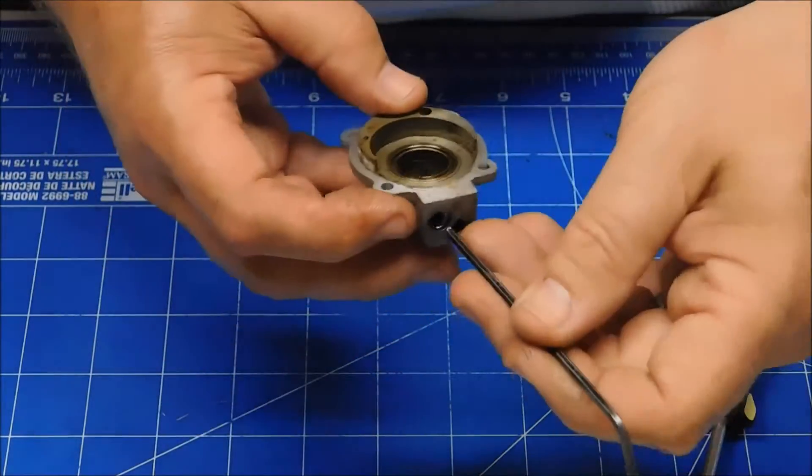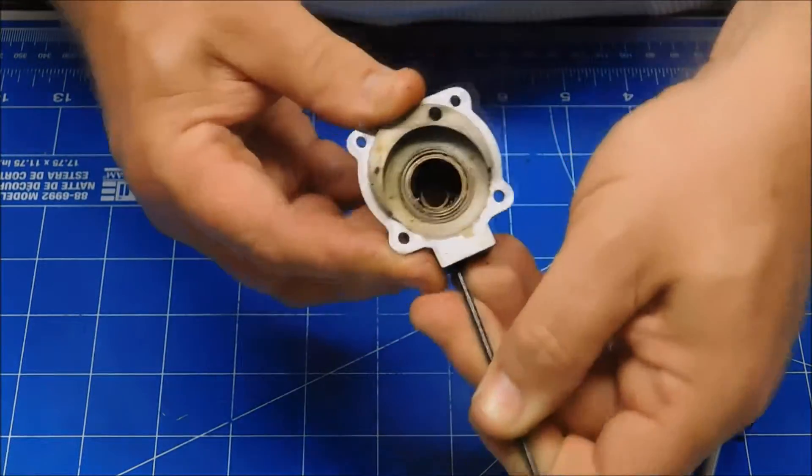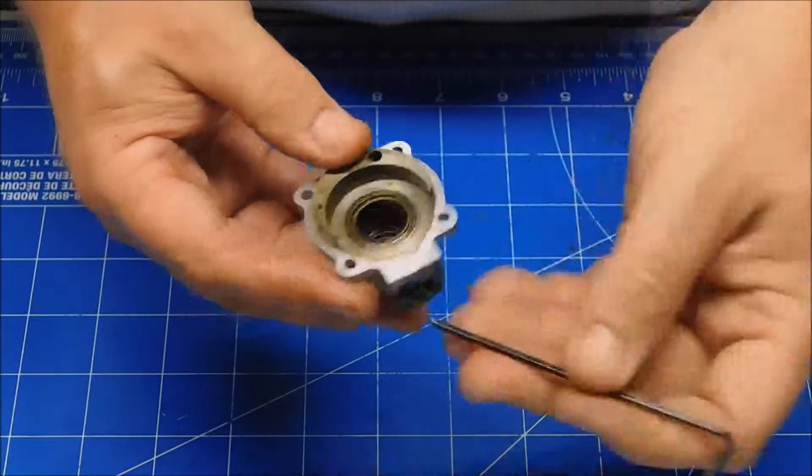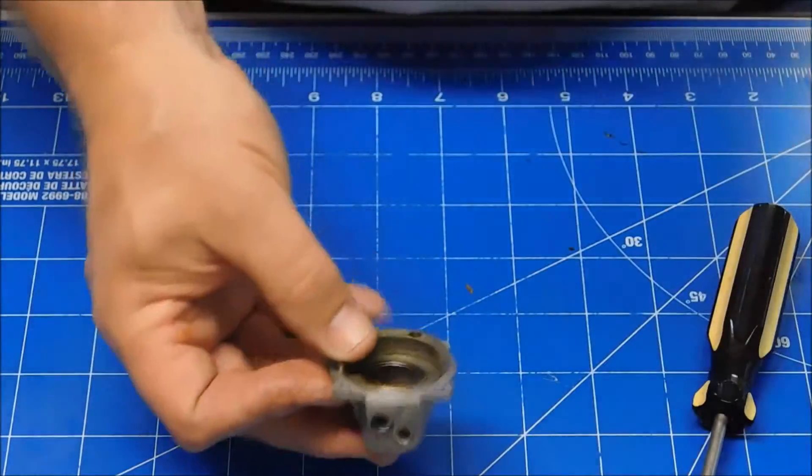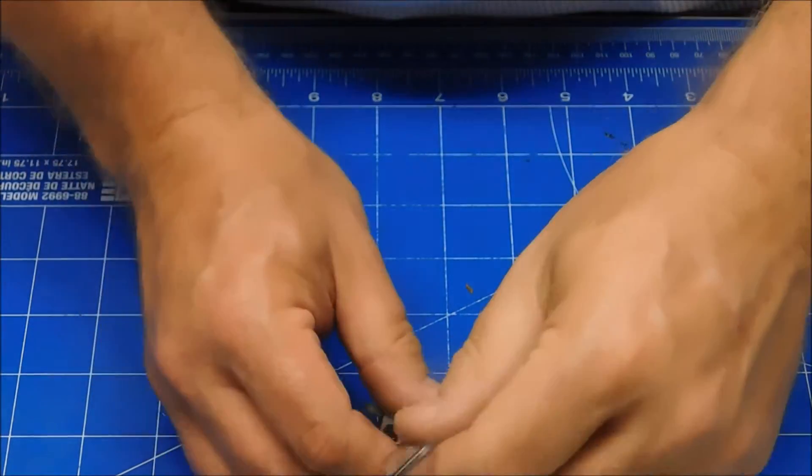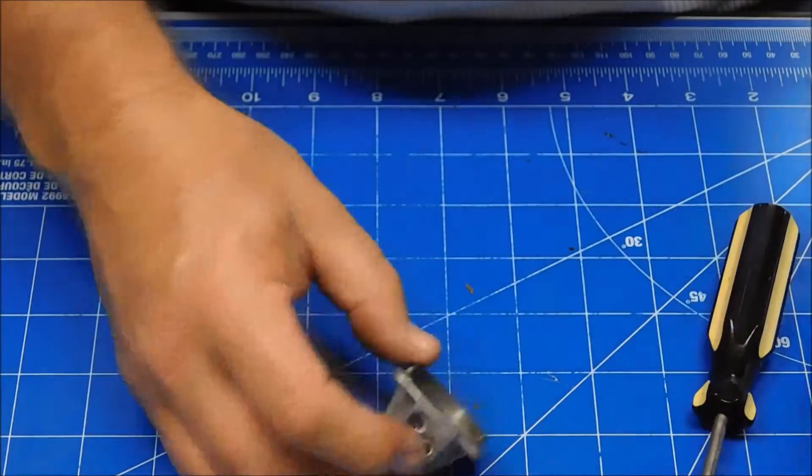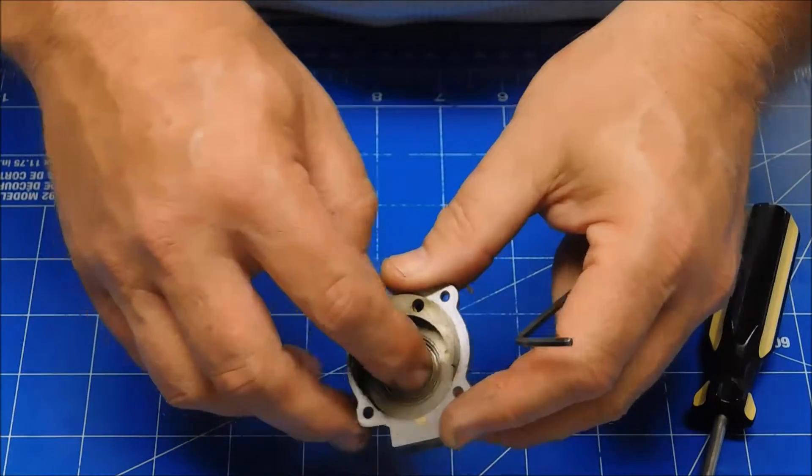But the cam followers, or tappets, are just frozen up in this thing. So that's all that is. I'm either going to try and drop some 3-in-1 oil in there, maybe just apply a little heat, and then just kind of tap them down and free them up because these things are just stuck.